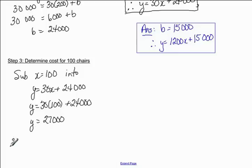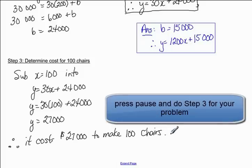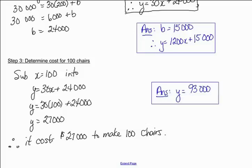So we're just going to finish it off with a therefore statement since it's a word problem. Therefore it costs $27,000 to make 100 chairs. Okay, so I'd like you to try step three for your problem. The answer to your problem is shown in the blue box. So this is an example on how to solve an application of linear models.